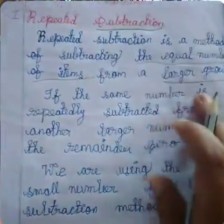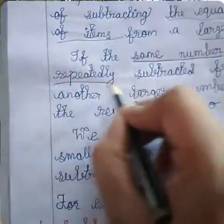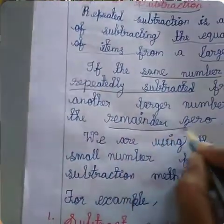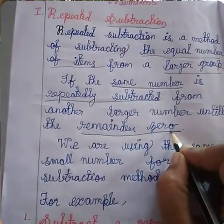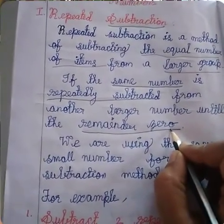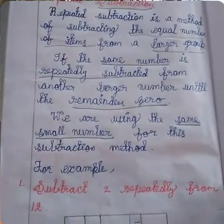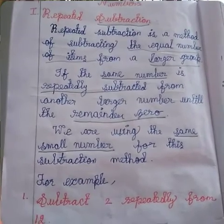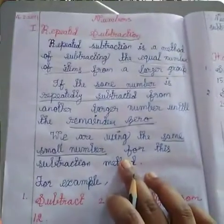If the same number is repeatedly subtracted from another large number until the remainder is zero, you have to subtract the number until you get remainder zero. If you get remainder zero, that is enough for the sum. In repeated addition we use the same number for addition; in repeated subtraction we use the same small number to subtract from the big number — this is called the repeated subtraction method.